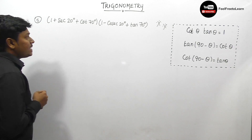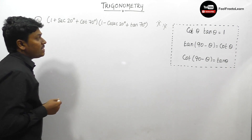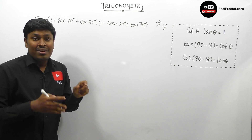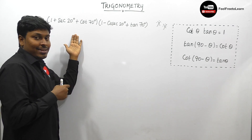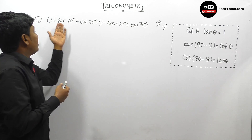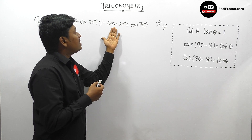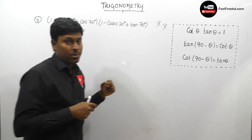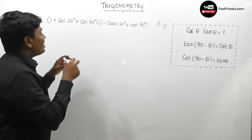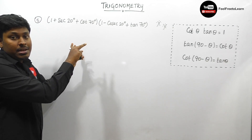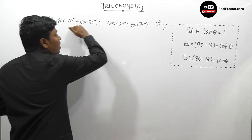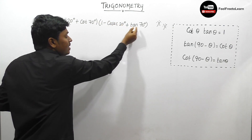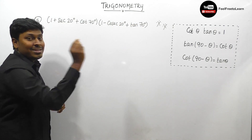Question number 5: (1 + sec 20° + cot 70°)(1 − cosec 20° + tan 70°). Here all the terms are in addition, so we cannot directly apply the cot θ · tan θ = 1 rule. Instead, convert all terms to a common degree of 20°. cot 70° = cot(90° − 20°) = tan 20°, and tan 70° = tan(90° − 20°) = cot 20°.